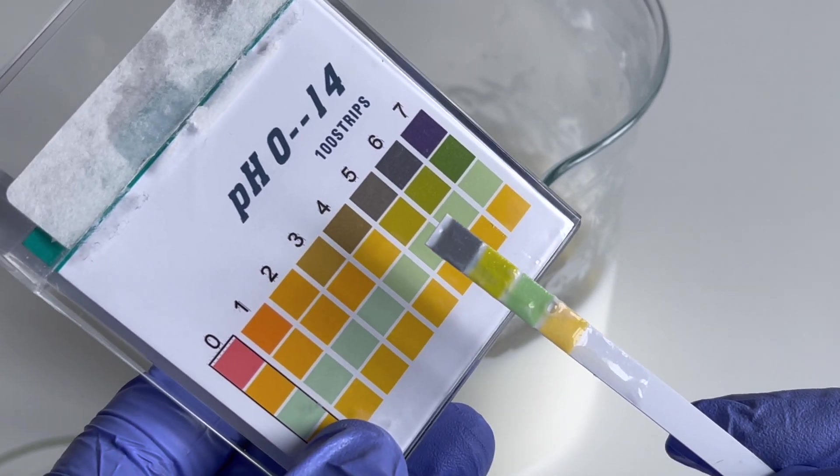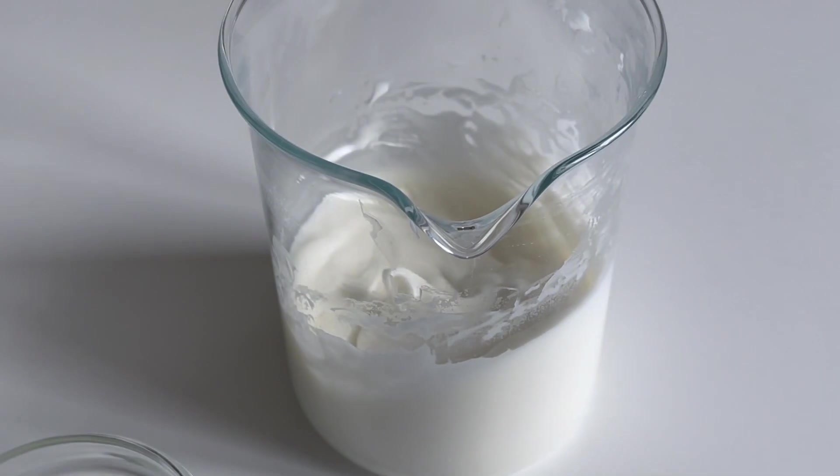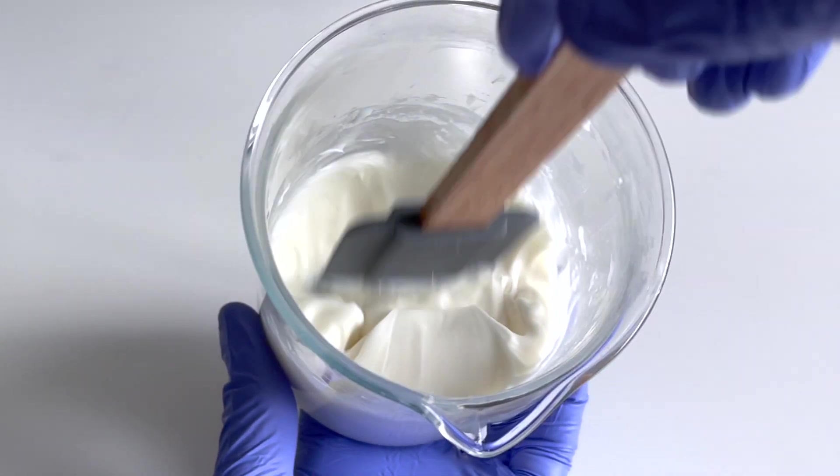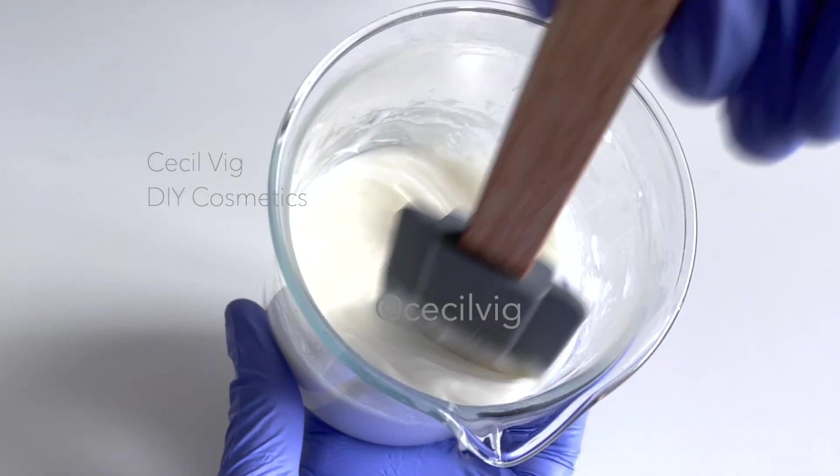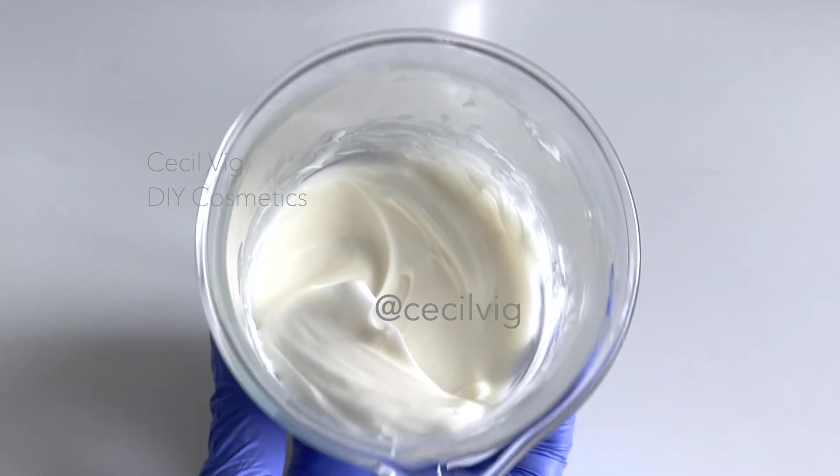To have an accurate pH result, please use a digital pH meter. You can now put your body butter into a clean sterilized container. It can be stored at room temperature.